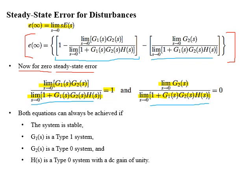For zero steady state error, the system must be stable, G1(s) must be a type one system, G2(s) must be a type zero system, and H(s) must be a type zero system with a DC gain of unity.